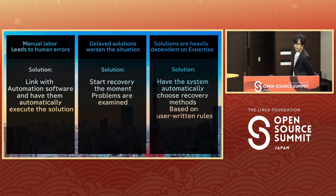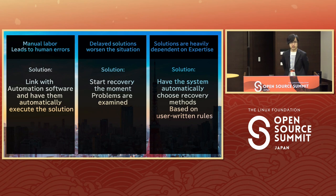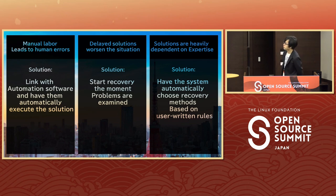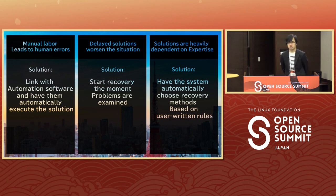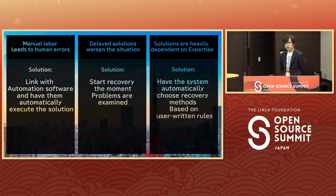To summarize, the problems can be solved with the help of the software. To reduce human errors, we can link with automation software — Exastro ITA, Ansible, and OpenTofu — and have them automatically execute the solution. For delayed solutions, if we automate the pipeline and connect it to Exastro Oase and monitoring tools, we can have recovery start the moment problems are detected. And for expert dependency, if we use predefined user-written rules, the system can work on itself, and even if the experts go away, the know-how will stay.